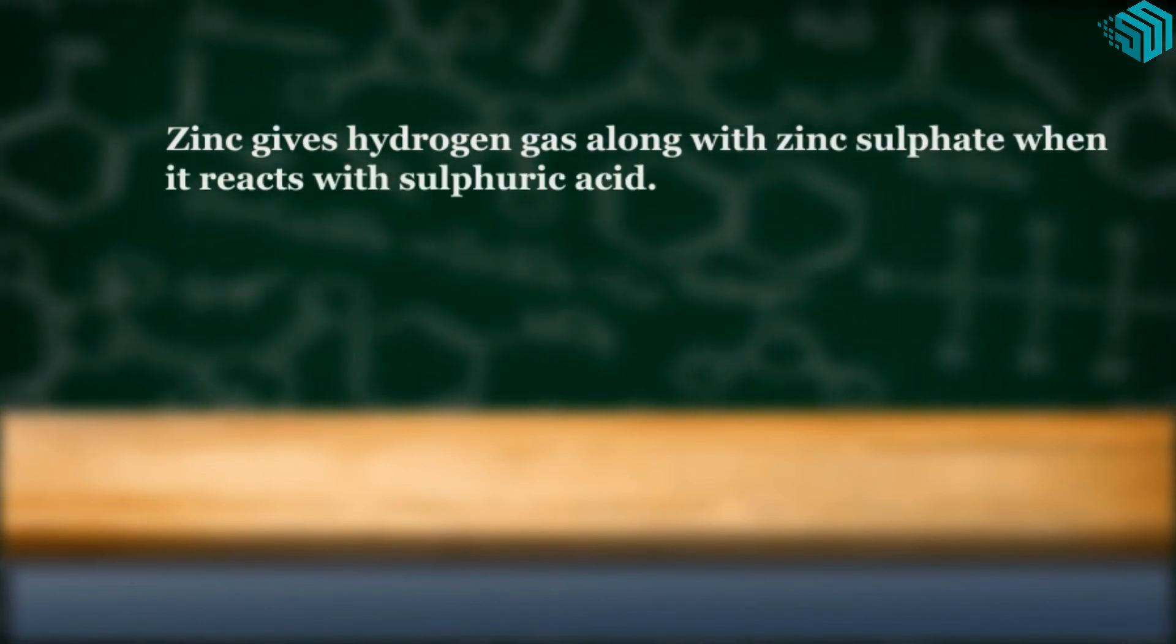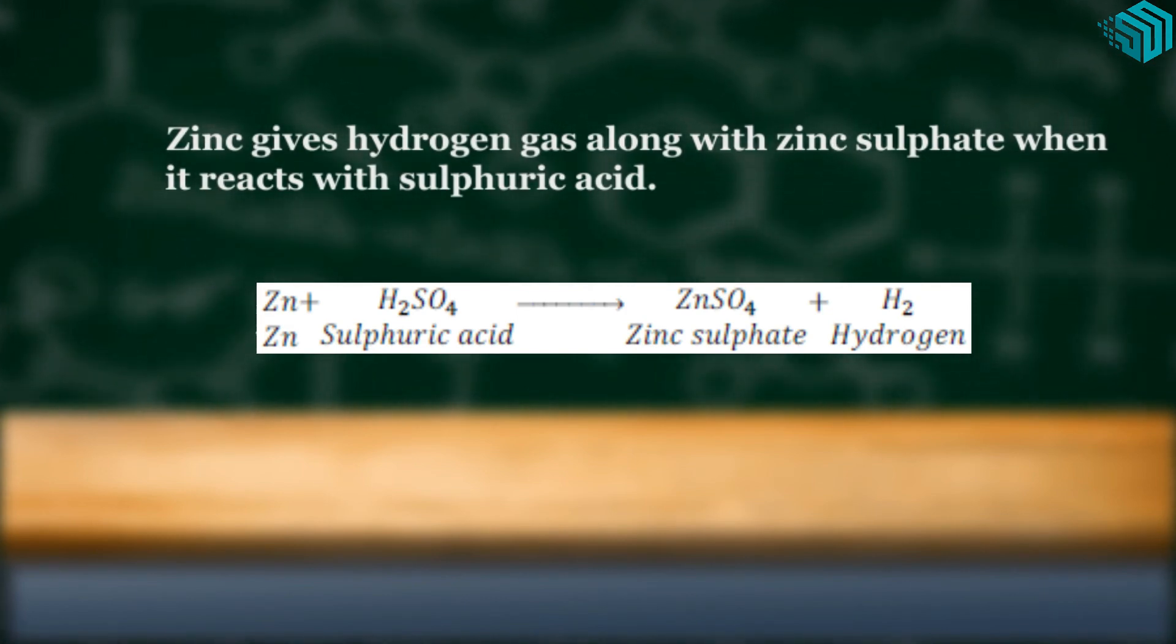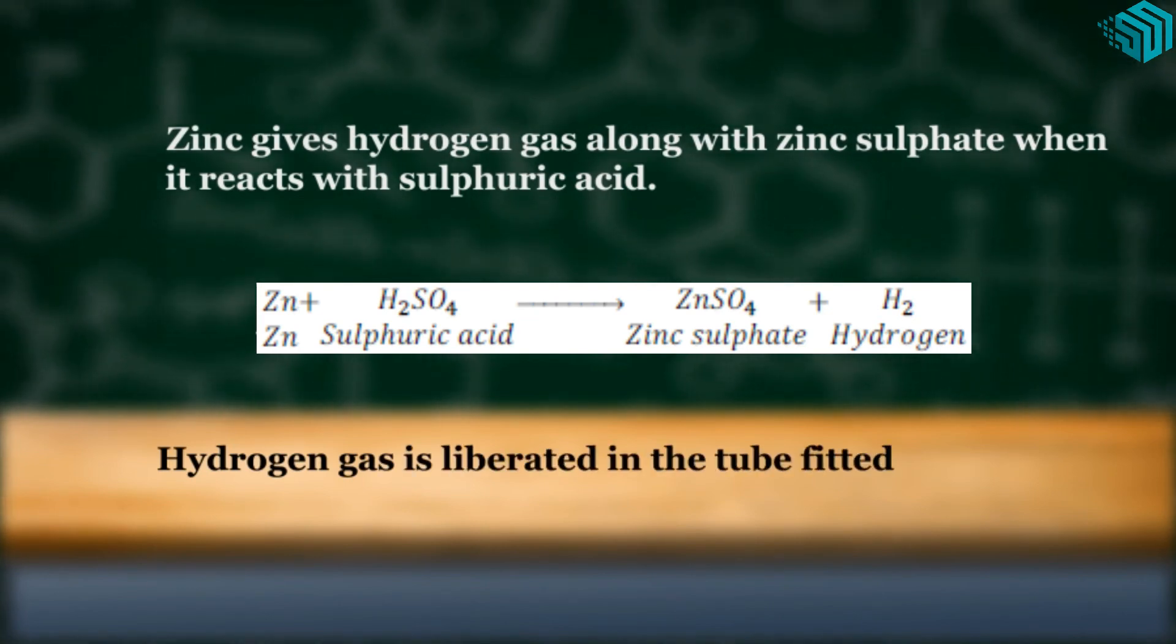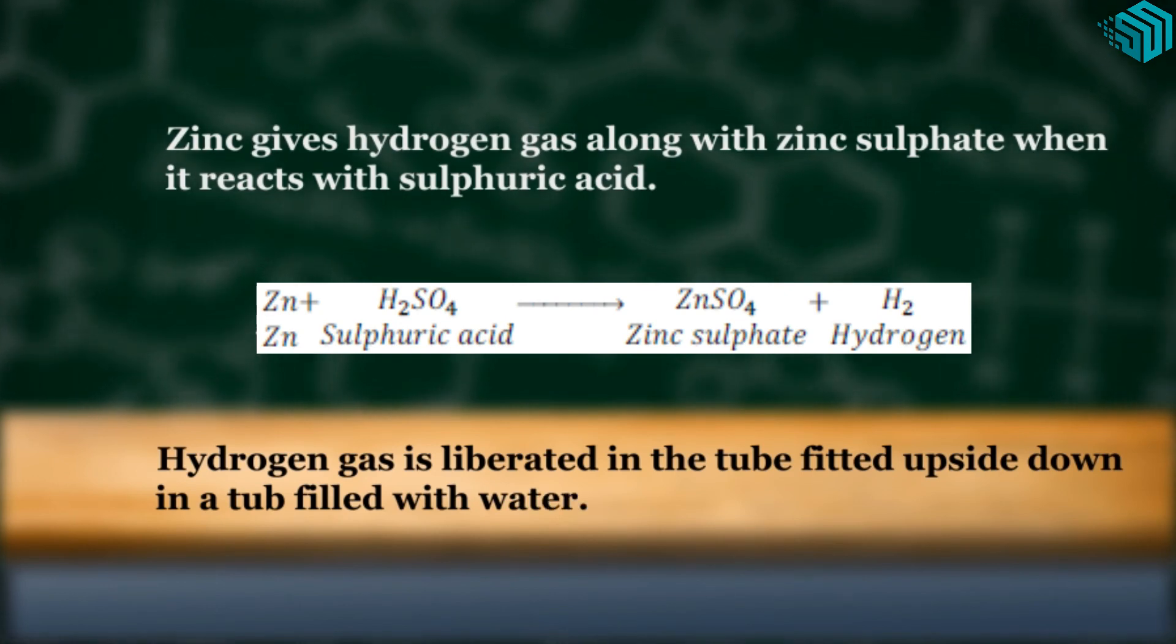Zinc plus sulfuric acid gives us zinc sulfate plus hydrogen. Hydrogen gas is liberated in the tube fitted upside down in the tub filled with water.